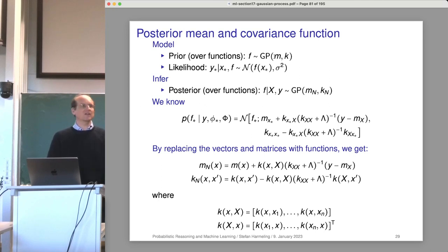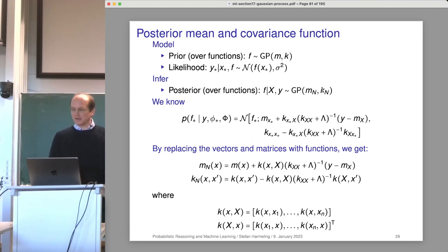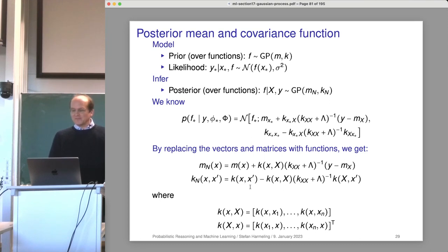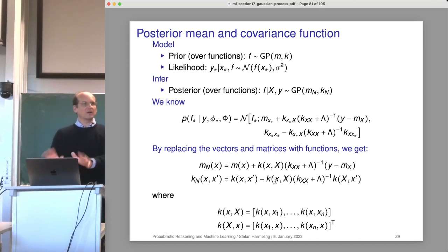For Gaussians everything is nice: a Gaussian prior and a Gaussian likelihood lead to a Gaussian posterior. For the GP situation we can derive a posterior distribution over functions, which is also a Gaussian process. Starting from initial knowledge encoded by a mean function and a covariance function, after seeing data we get updates — a new mean function and a new covariance function. We hand-wavily derived expressions using the kernel trick for the posterior mean and covariance functions, compatible with Bayesian linear regression.